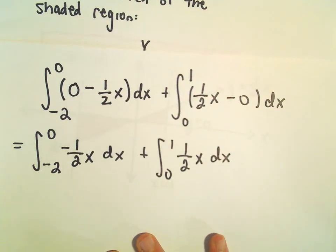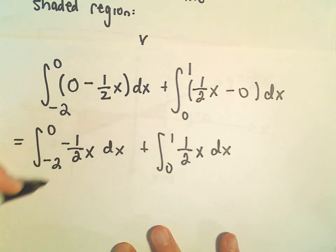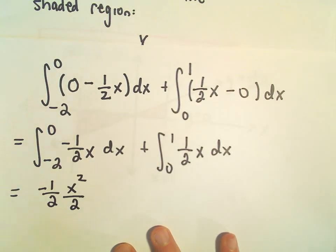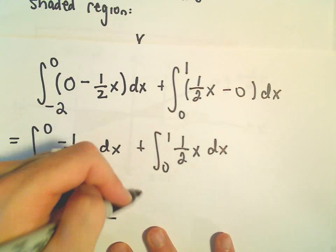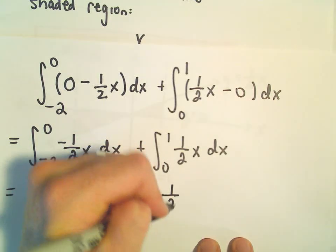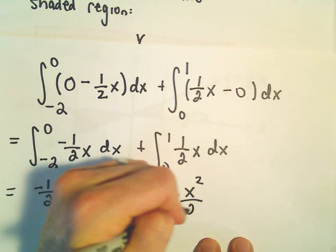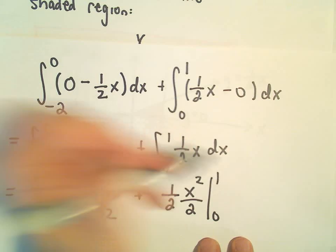I think we can probably knock them both out here at the same time. The negative 1 half comes along. We would get x squared over 2 for the first integral from negative 2 to 0. And then for our second integral, we'll get 1 half positive x squared over 2 from 0 to 1.